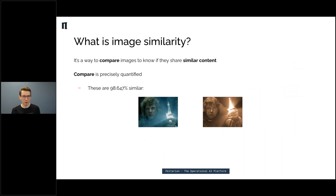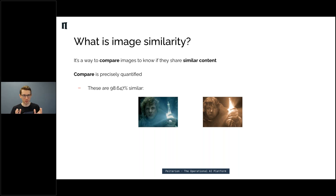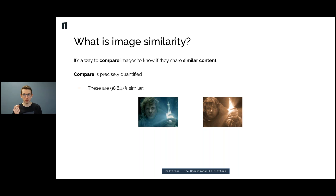Similarity is a way to compare images. If I get a method that says here are two images and the result is 98.647% similar, I've got a precise measure that gives me numbers for this vague concept of similarity. And if I show these two images it will always be the same number. So I have something reliable that I can build systems around.